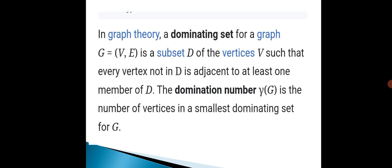The number of vertices in a smallest dominating set is called the domination number, and it is denoted by gamma of G.